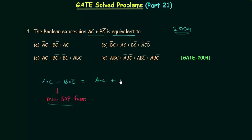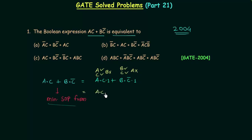A and C or B and C complement can be written as A and C and 1, or B and C complement and 1. In the first term, A is present, C is present, and B is absent. In the second term, B is present, C is present in complemented form, and A is absent. I will write B or B complement in place of 1 because B is absent, and A or A complement in place of this 1 because A is absent.